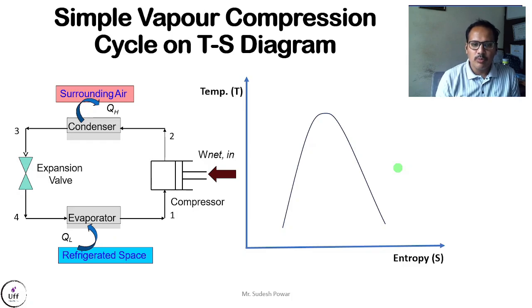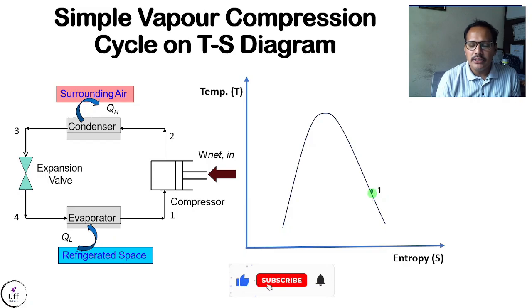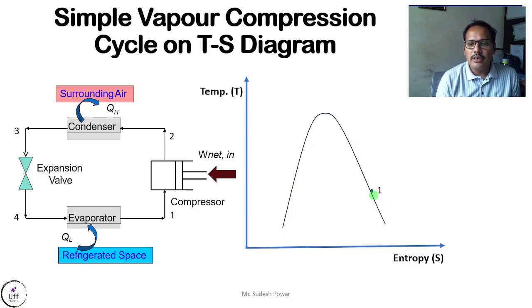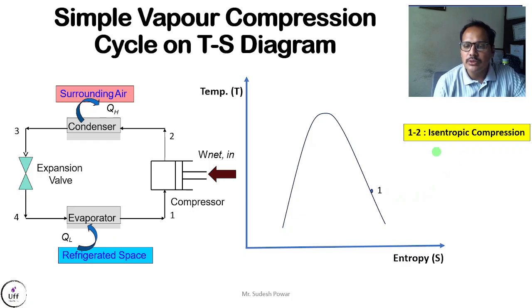Let's plot the points. Point 1 is at low pressure and low temperature — we plot this on the saturated vapor line. In the simple vapor compression cycle, point 1 is assumed to be on the saturated vapor line, though it may be inside or outside the dome in other cases. The process 1 to 2 is isentropic compression, also known as reversible adiabatic compression.